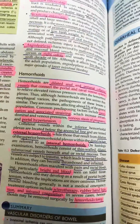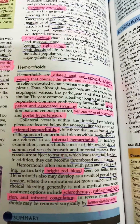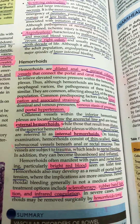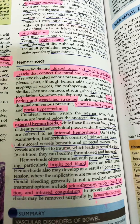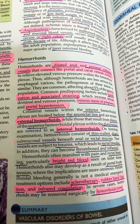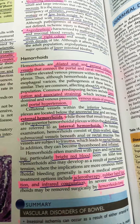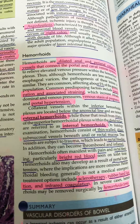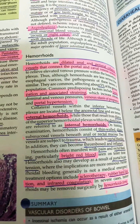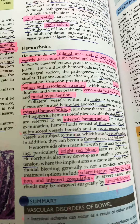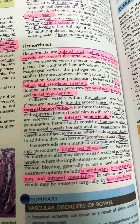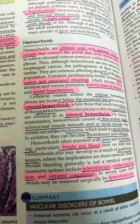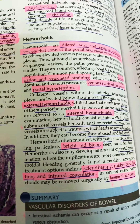Next we discuss hemorrhoids, which are dilated anal and perianal collateral vessels that connect the portal and caval venous systems. About 5% of the general population is affected. Causes include straining in constipation, venous stasis of pregnancy, or portal hypertension. External hemorrhoids are located below the anorectal line, while internal hemorrhoids are due to dilation of the superior hemorrhoidal plexus and external ones involve the inferior plexus.